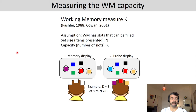As a measure of working memory capacity, k is often used, indicating how many items you can store. The assumption is: if working memory has slots that can be filled and the set size is n and your capacity is k, then k out of these n objects can be stored.